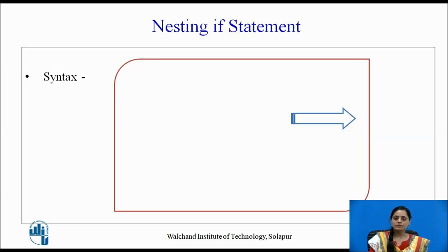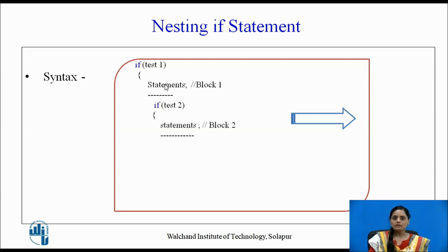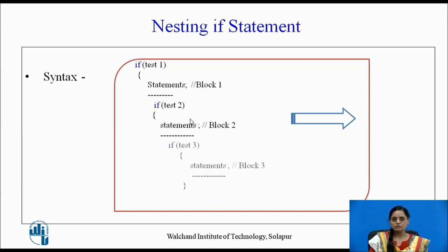What is the syntax for writing these statements in C? First, we write the keyword if followed by test1, then the statements to be executed if test1 evaluates to logical true. Within the same if block, we enclose one more if structure followed by test2. The statements in block 2 will be executed if both test2 and test1 evaluate to true. In this way, we can nest one if-else inside another if statement.